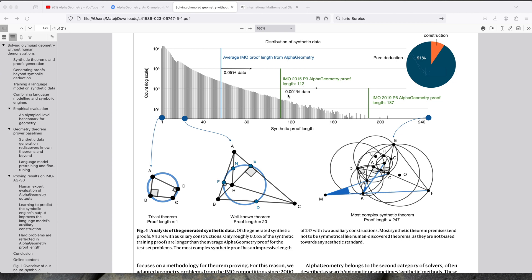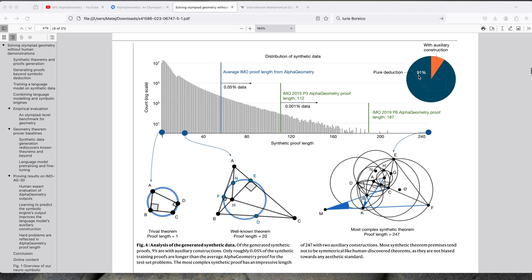So you can see that the proofs can get really, really long. And also here, it shows you that 91% of this synthetic data was able to be solved completely just with the pure deduction. So that was the easy part of the model. And for 9%, you needed the magic rabbit. You need that little extra sauce to be able to solve these problems.